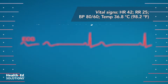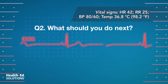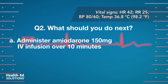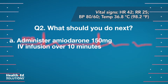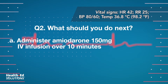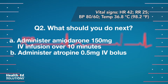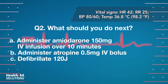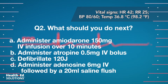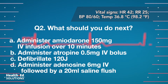Question 2: What should you do next? A. Administer amiodarone, 150 mg intravenous infusion over 10 minutes. B. Administer atropine, 0.5 mg intravenous bolus. C. Defibrillate 120 joules. D. Administer adenosine, 6 mg intravenous, followed by a 20 ml saline flush.